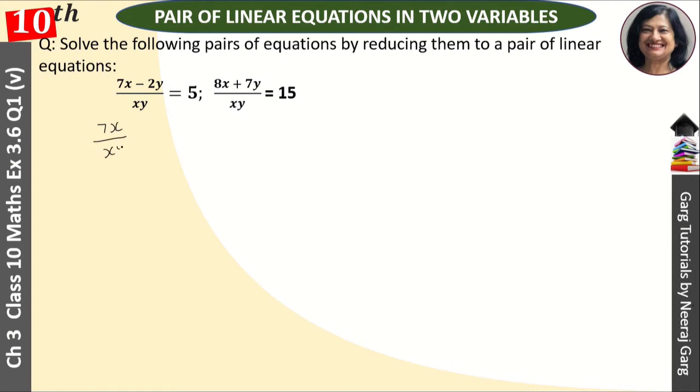7x upon xy minus 2y upon xy. We have separated the denominator from the numerator. This x will cancel and this y will cancel. Our equation will be 7 upon y minus 2 upon x, that is equal to 5. This is our first equation.